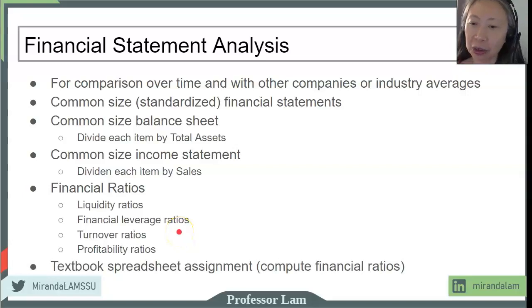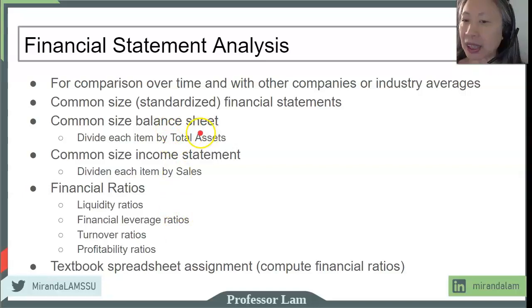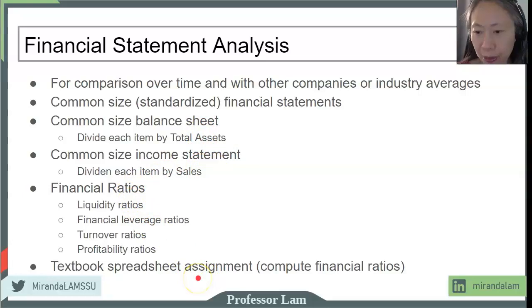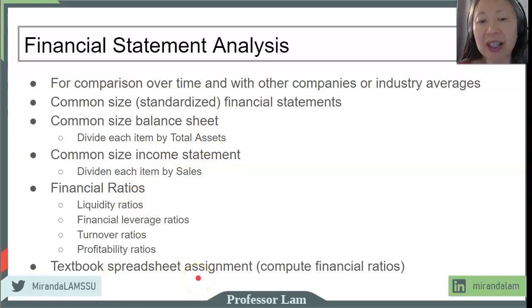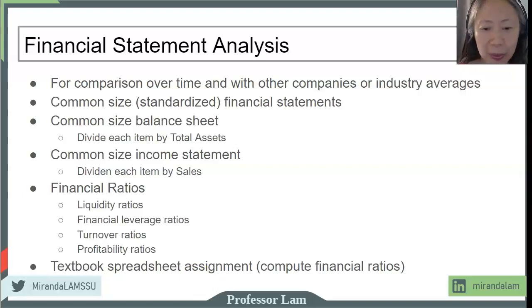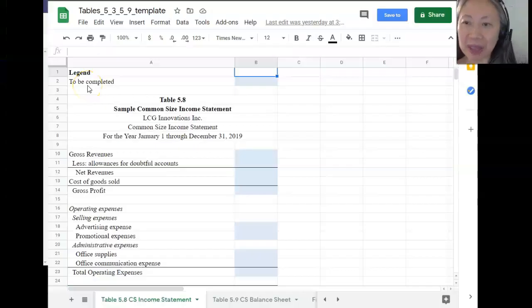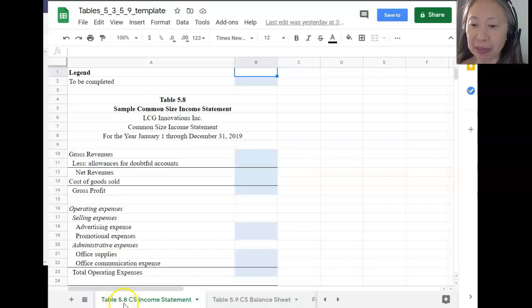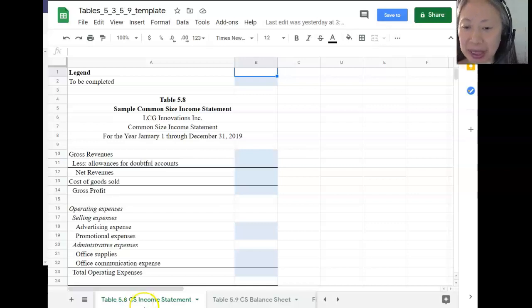To demonstrate all these factors — including the common size balance sheet and income statement and financial ratios — we're going to switch over to the spreadsheet. It's the same template that you have, so pause the video now and open up your spreadsheet so you can follow along. Now that you have your spreadsheet open, let's scroll to the tab that says Table 5.8. CS stands for common size — common size income statement.